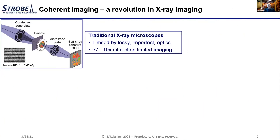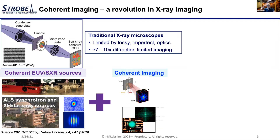The technique we use is called coherent diffractive imaging, which has been a real revolution in X-ray imaging. A traditional X-ray microscope used at a synchrotron uses the synchrotron light source like a light bulb, focuses light using a condenser zone plate onto a sample, and then uses a zone plate optic to image the sample onto a CCD. This technology works, but is limited by the zone plate optic, leaving resolution at about 10 times the diffraction limit.